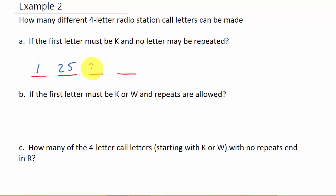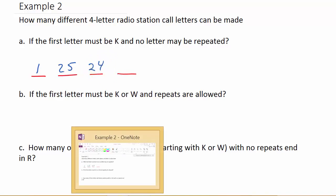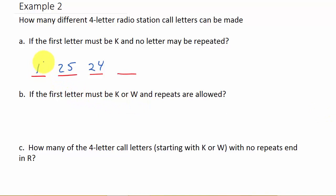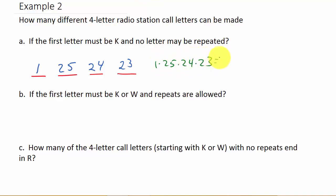For the third letter I have 24 choices, because I've used a letter in the first and second positions, so two letters are gone. For the last position I only have 23, because three letters are already gone and none can be repeated. So the solution is 1 times 25 times 24 times 23, and that is 13,800 different ways to choose the call letters.